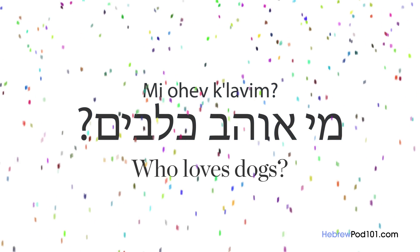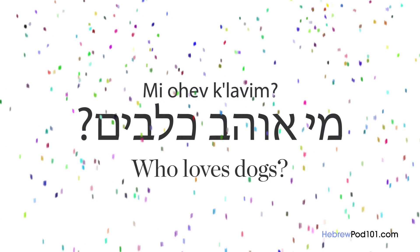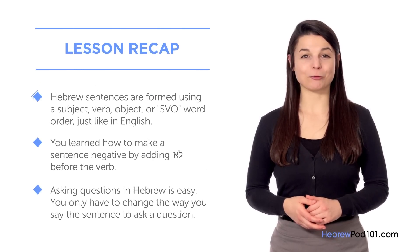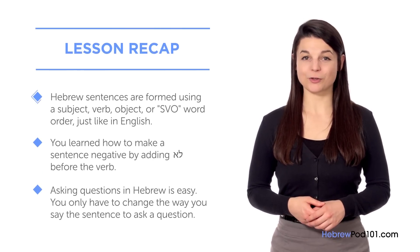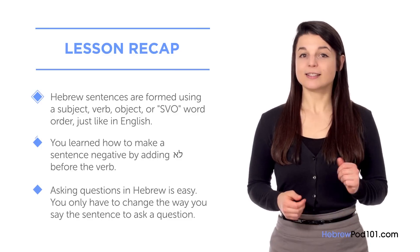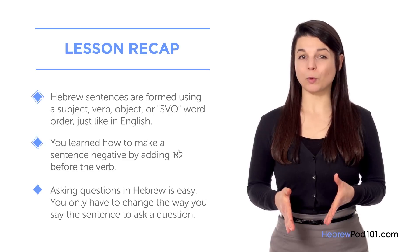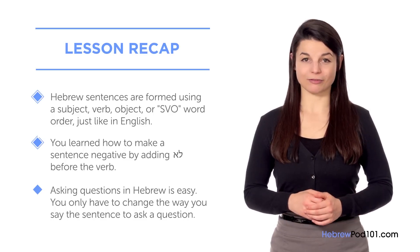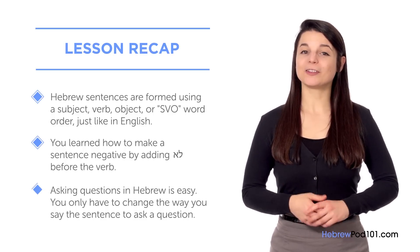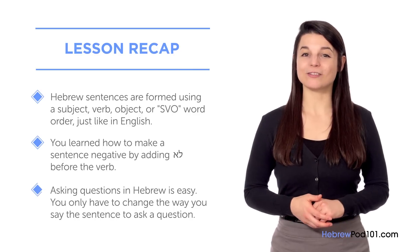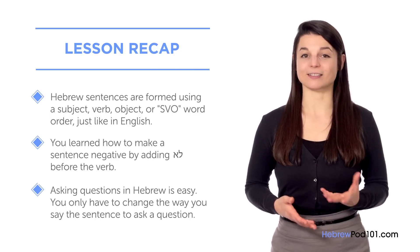In this lesson, you learned that Hebrew sentences use subject-verb-object (SVO) word order, just like English. You learned how to make a sentence negative by adding 'lo' before the verb. And you learned that asking questions in Hebrew is easy — you only have to change the way you say the sentence.